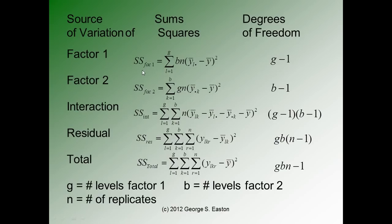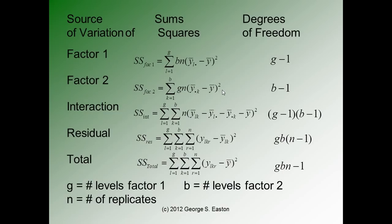For example, there would be formulas for the sum of squares for the first factor, the first main effect. There are going to be things like B, the number of levels of factor two, times N the number of replicates, times the mean with dot notation — where you average over the index where the dot is. There are similar formulas for factor two, the interactions, the residuals, and the total. Frankly, I can't remember all of this stuff and it never really connected with me when I was learning it originally. So instead of presenting all these formulas, I think there is a much easier and simpler way to think about things, which I'm now going to show you in Excel.